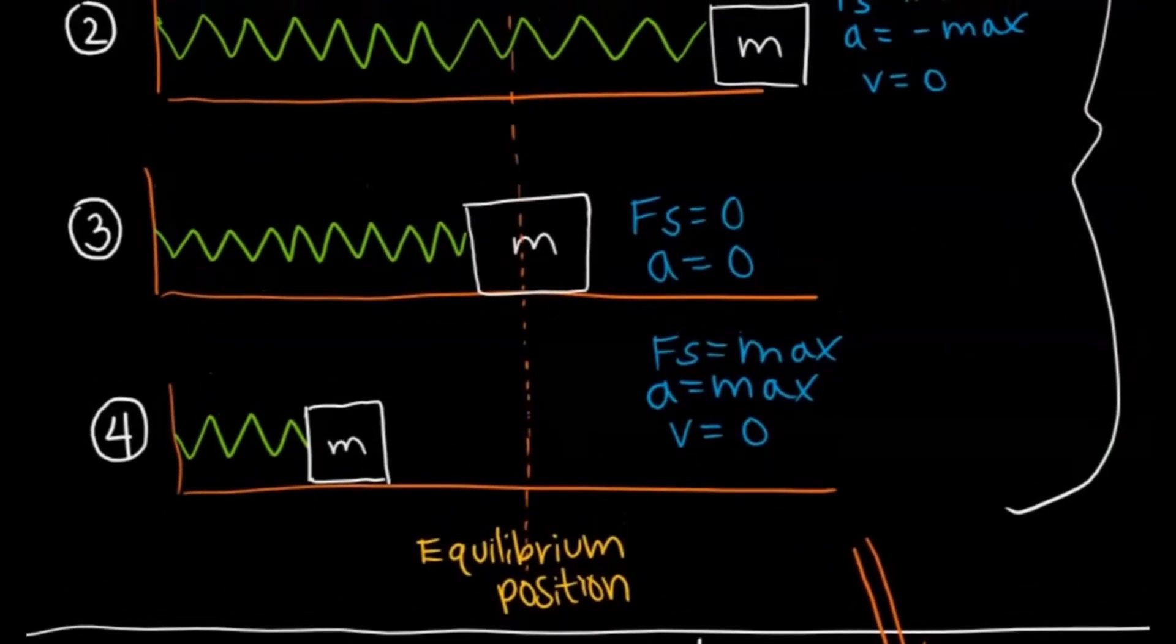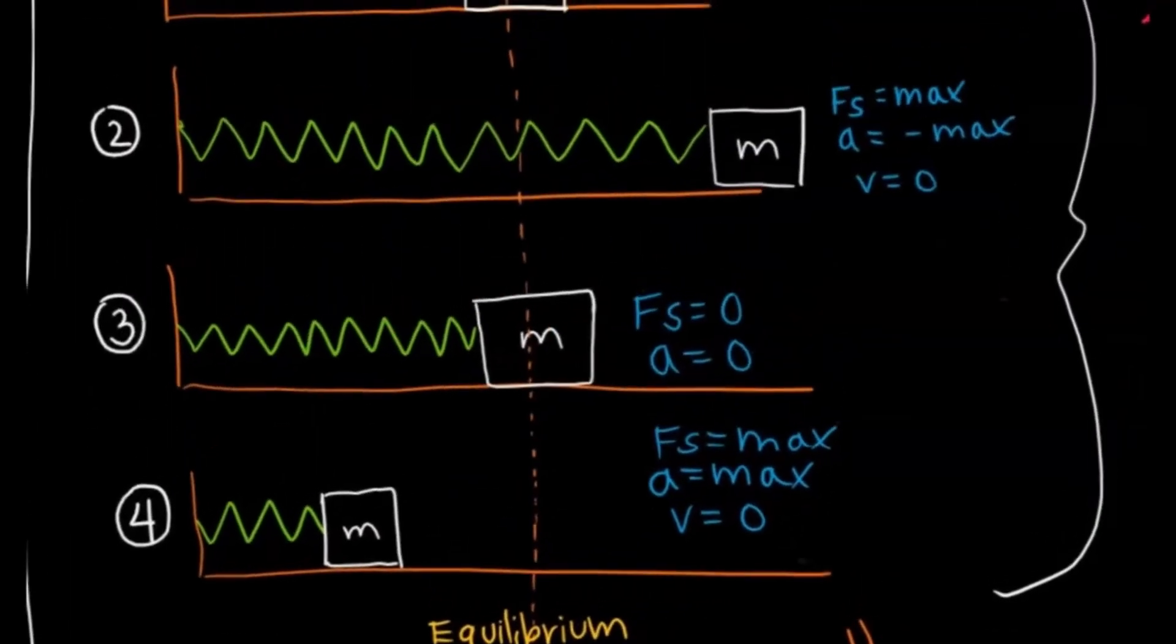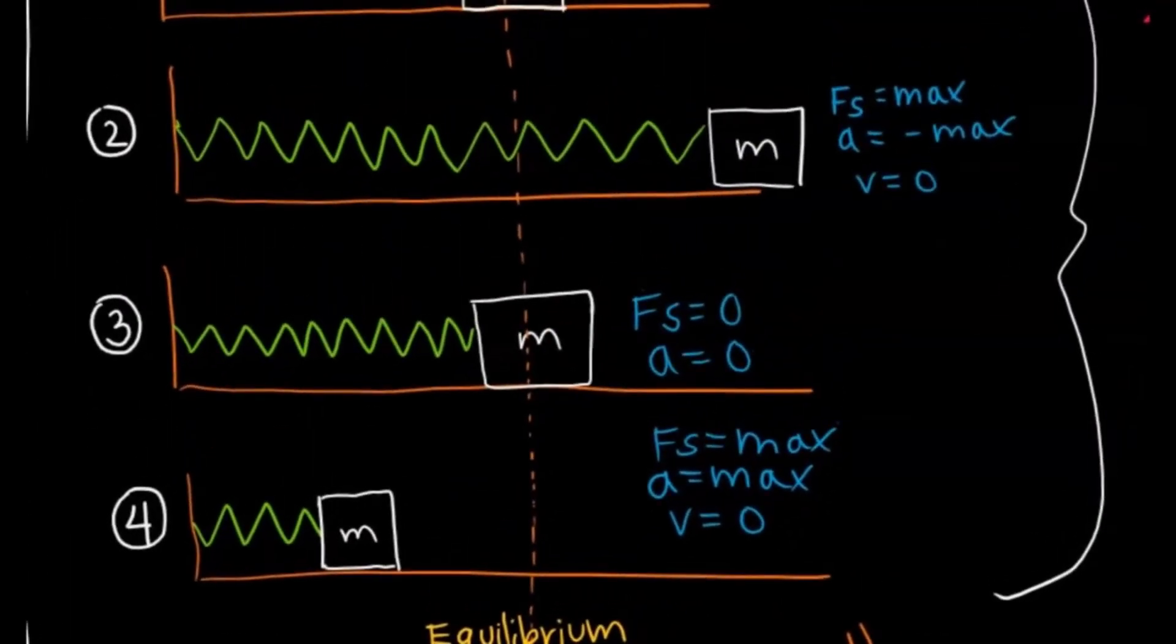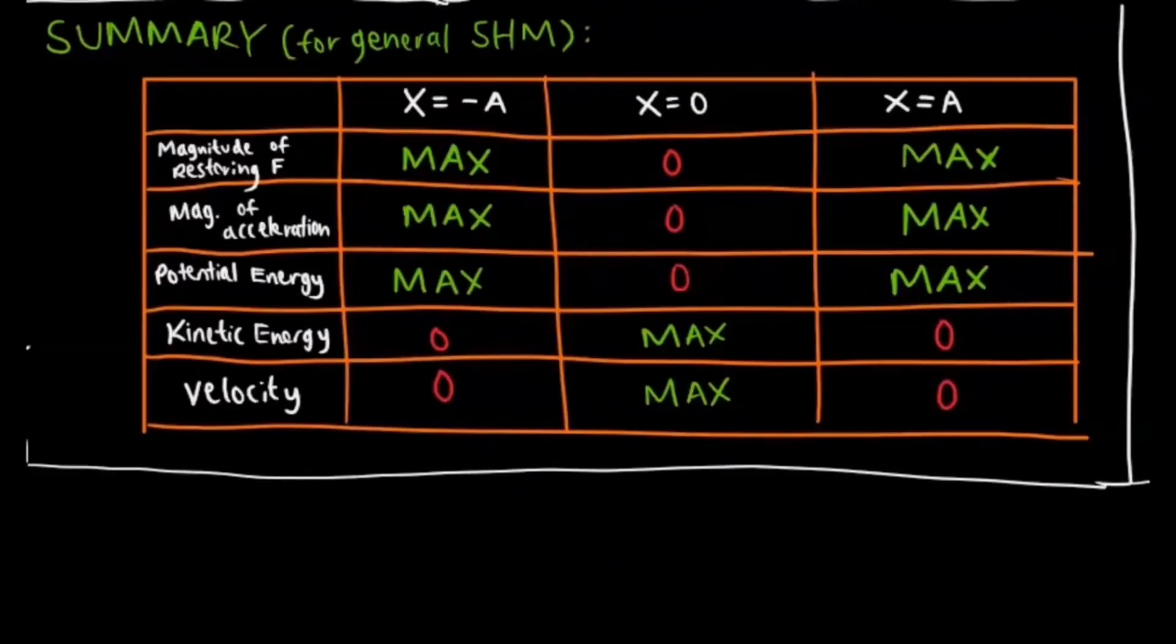When it reaches the other side, that negative amplitude, it's very similar to position 2 where the force is maximum, but the acceleration is also maximum, except now it's in the positive direction because you're trying to go to the right side to bring that mass on the spring back towards that equilibrium position. And then your velocity is zero.